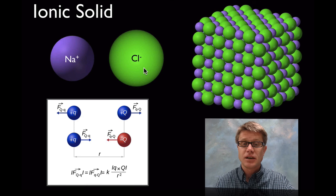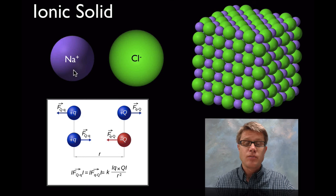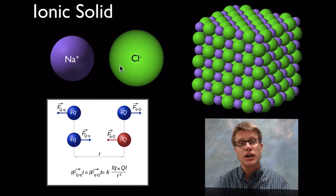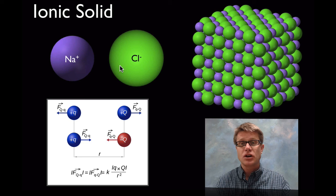We're going to have anions like chlorine ion and then cations like sodium ion. What's happened is we transferred an electron from one to another, and then they're held together by electrostatic charge.